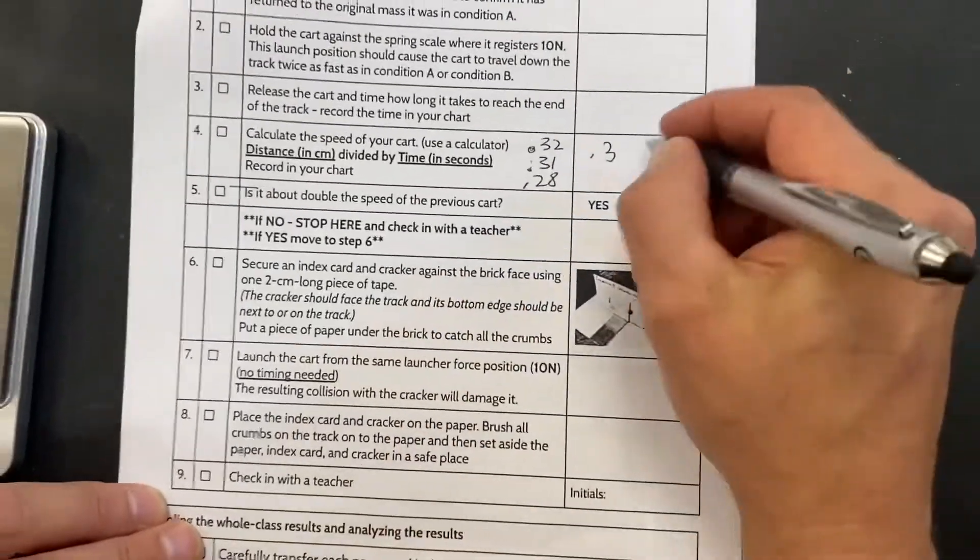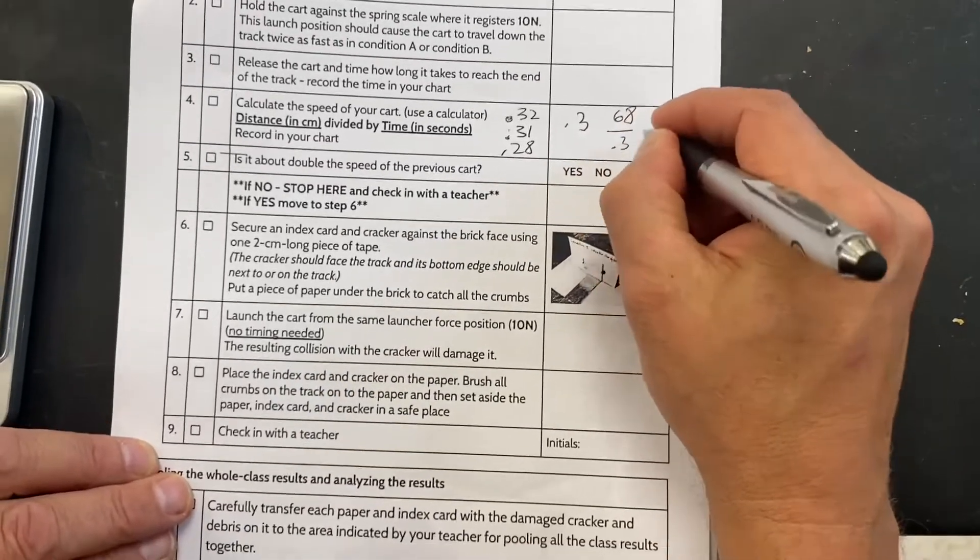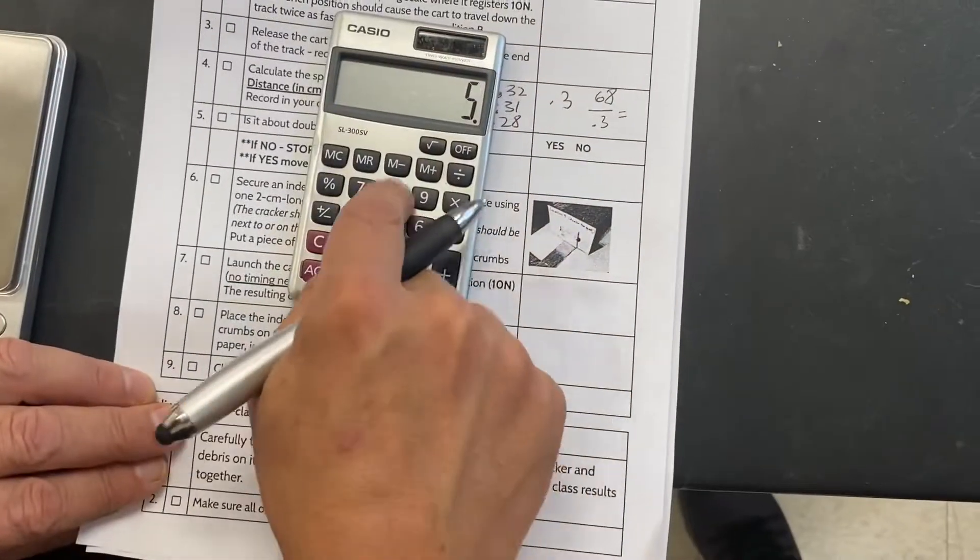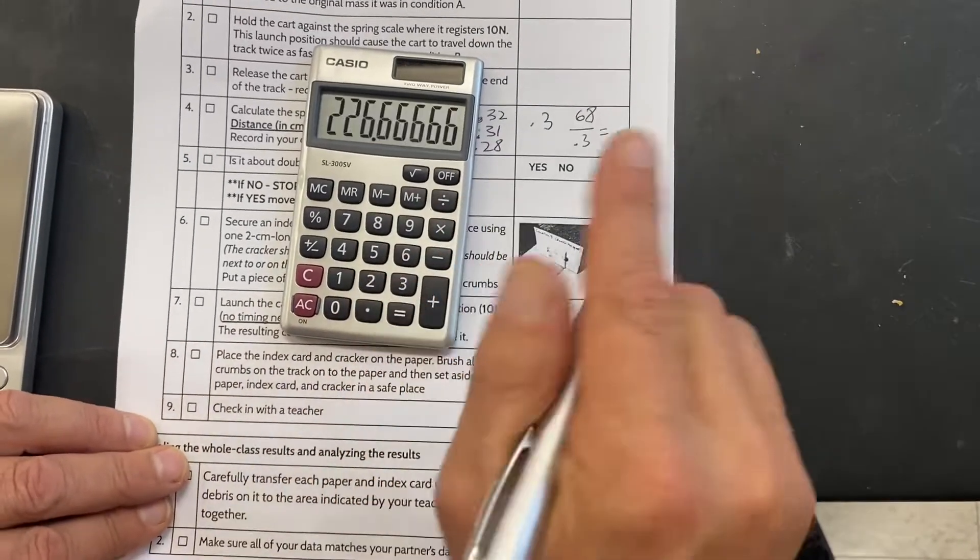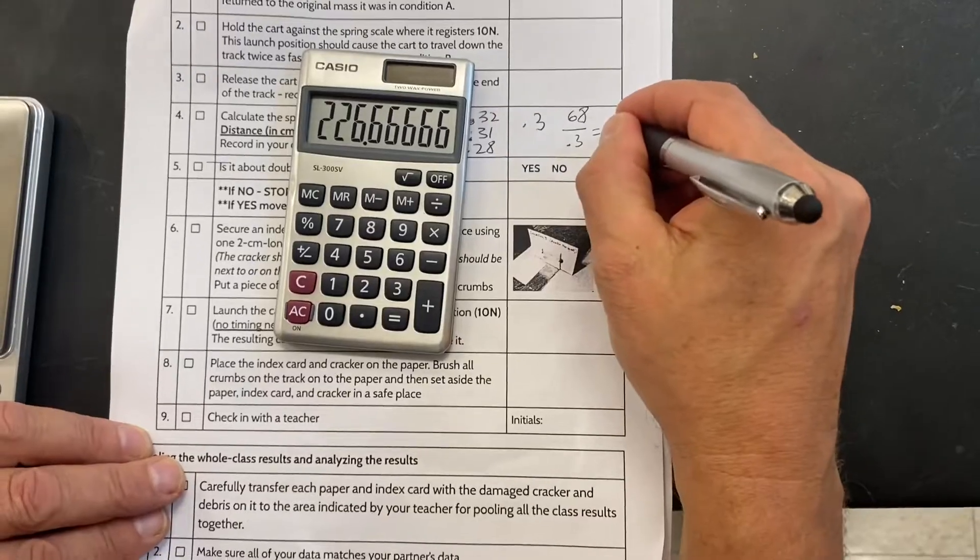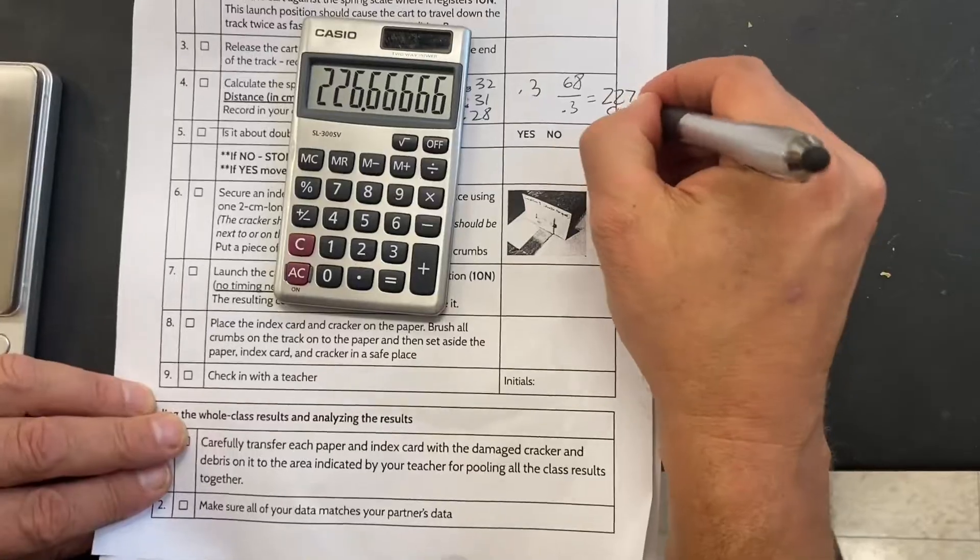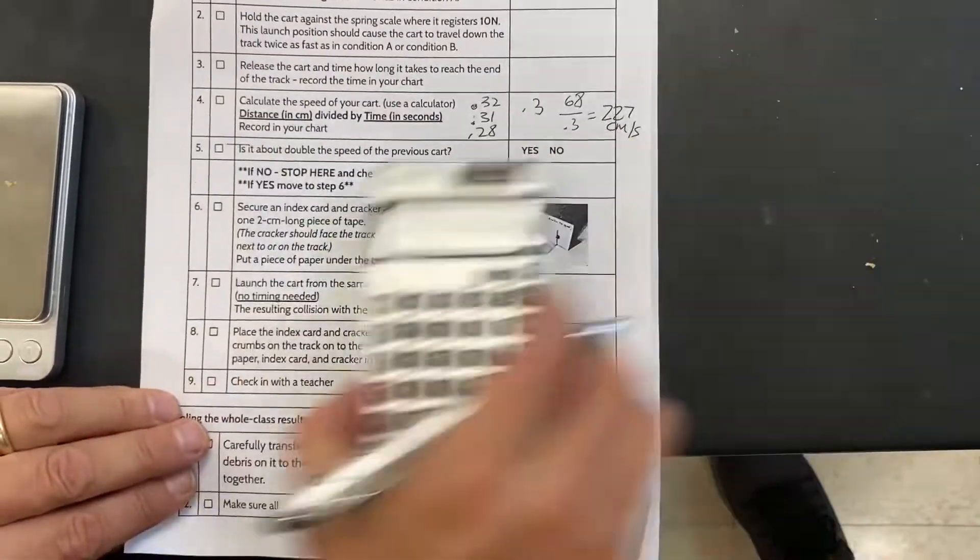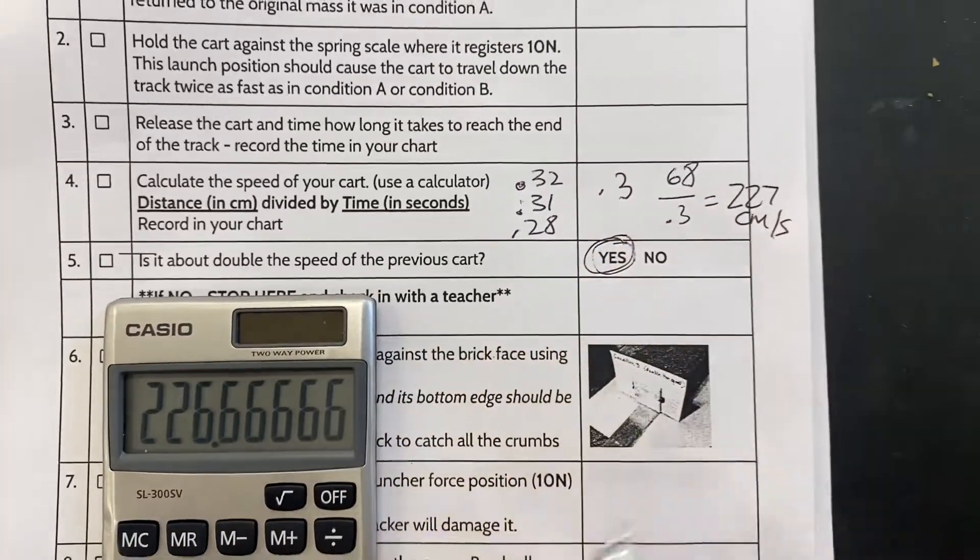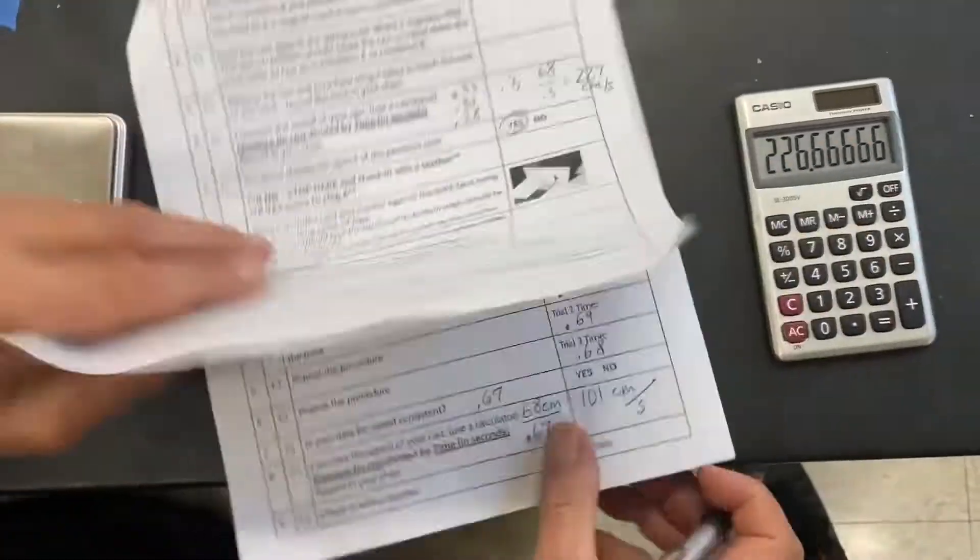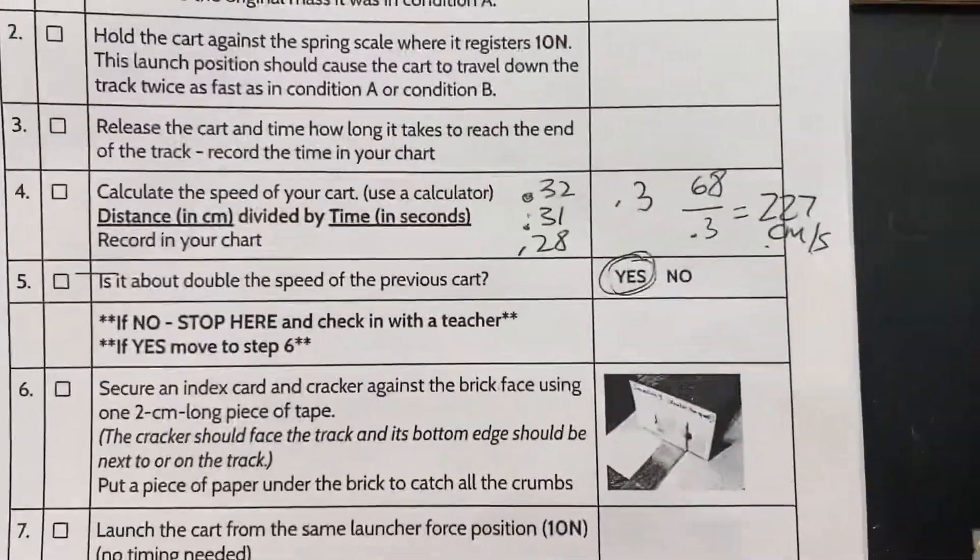And now we're going to calculate the speed. It's still 68, but it's divided by 0.3 this time. 68 divided by 0.3. We're not always good at math either. And it's roughly 227, 227 centimeters per second. Oh, and we had 113 before. Yeah, look at that. And is it about double speed of the previous cart? Absolutely. Look at that. Compare it to this number. We got 113. So here we got 227. Now we're good.